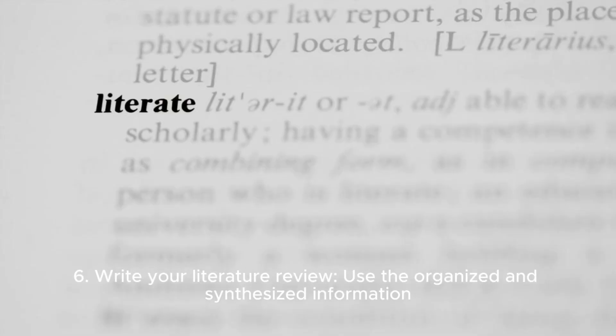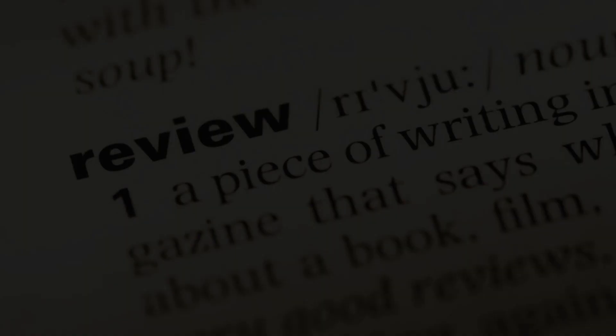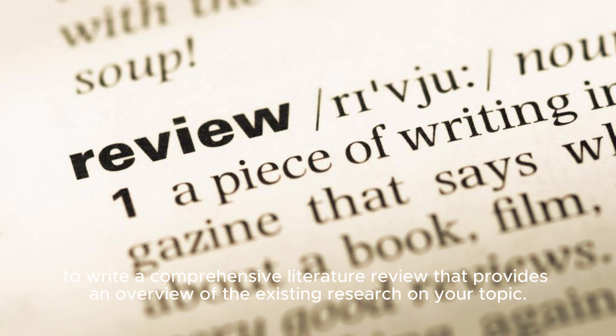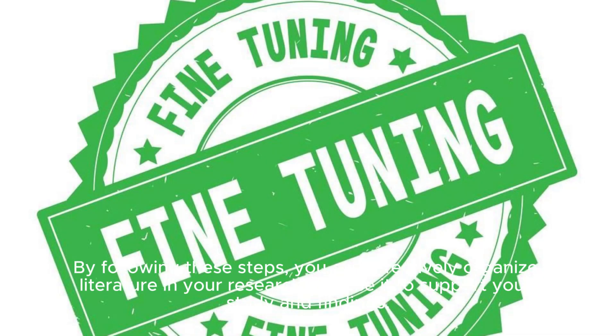Step 6: Write your literature review. Use the organized and synthesized information to write a comprehensive literature review that provides an overview of the existing research on your topic. By following these steps, you can effectively organize literature in your research and use it to support your study and findings.